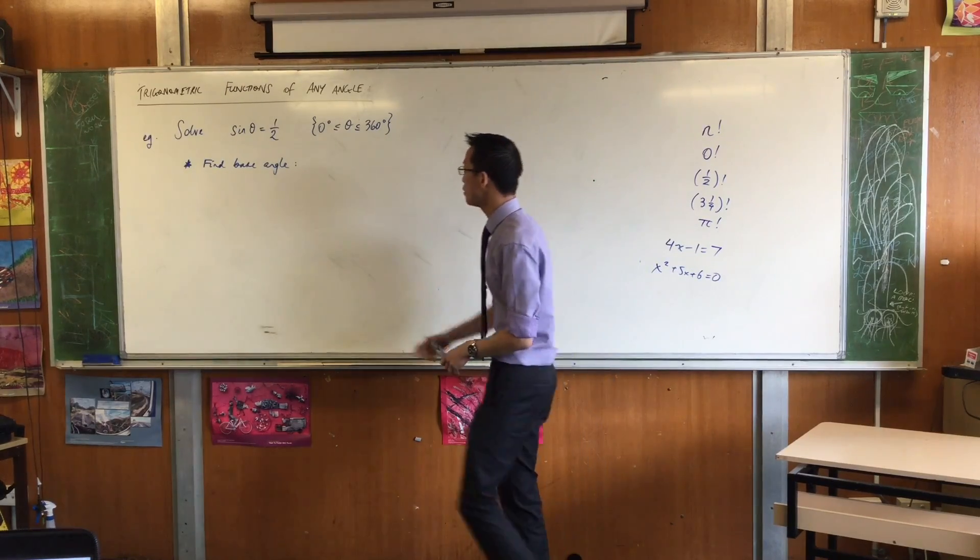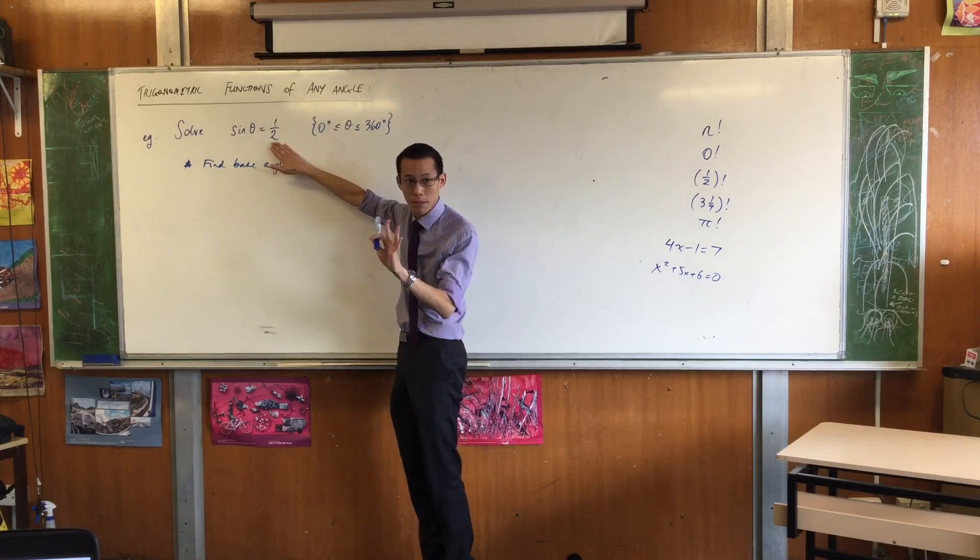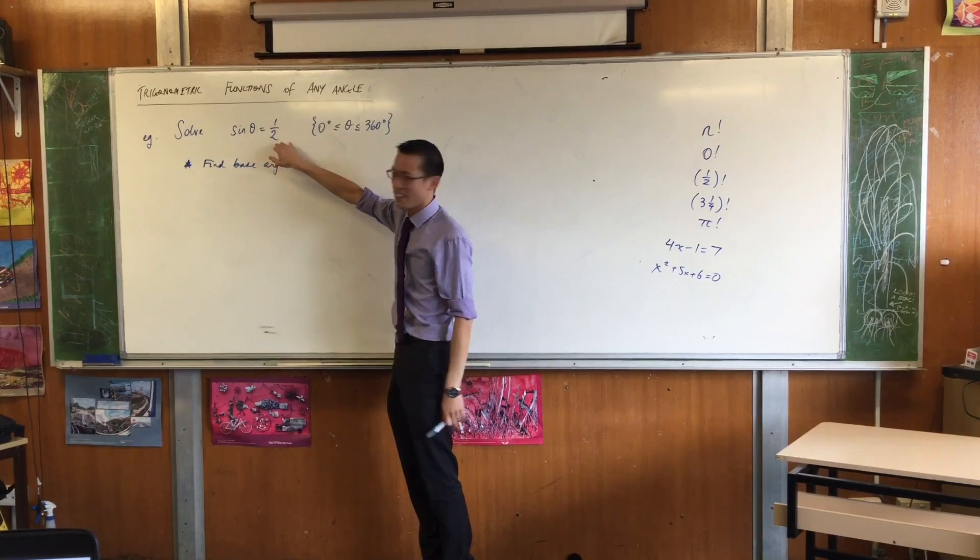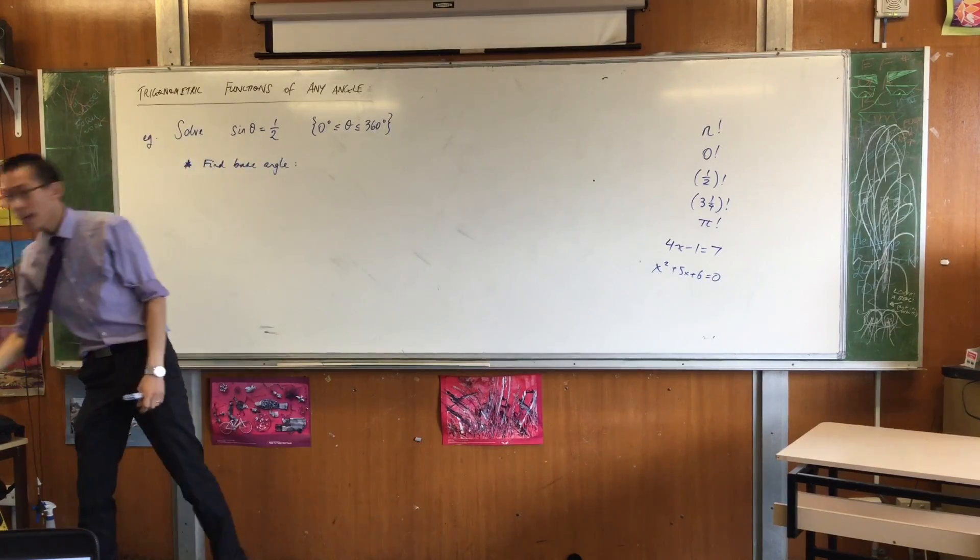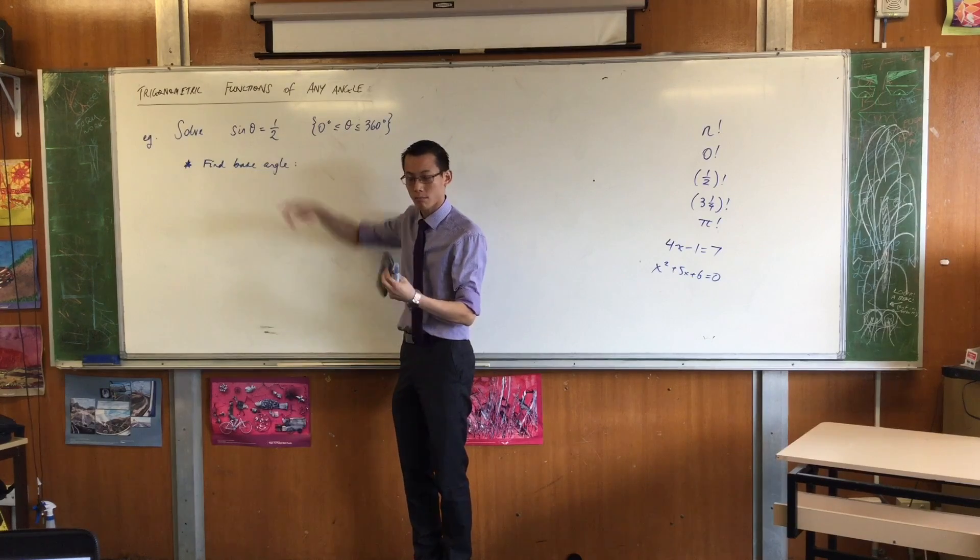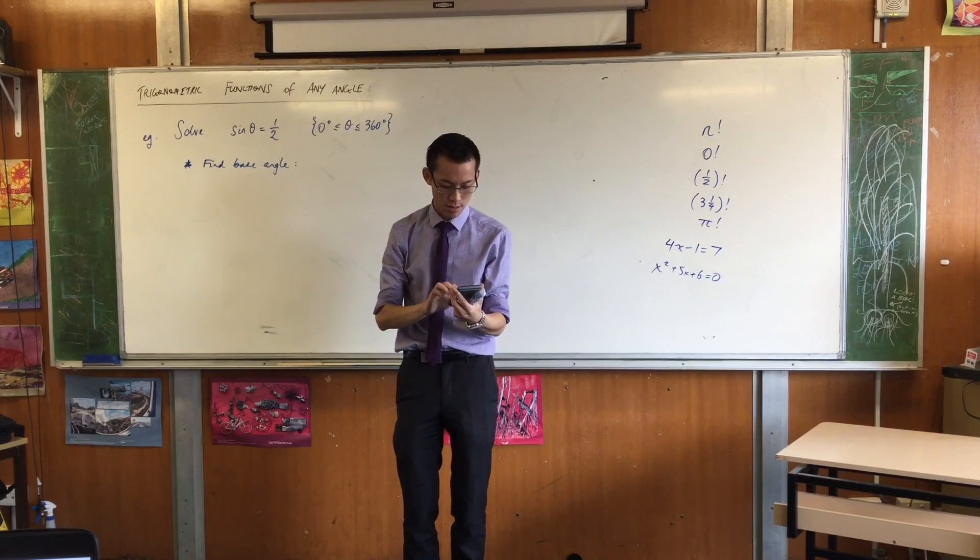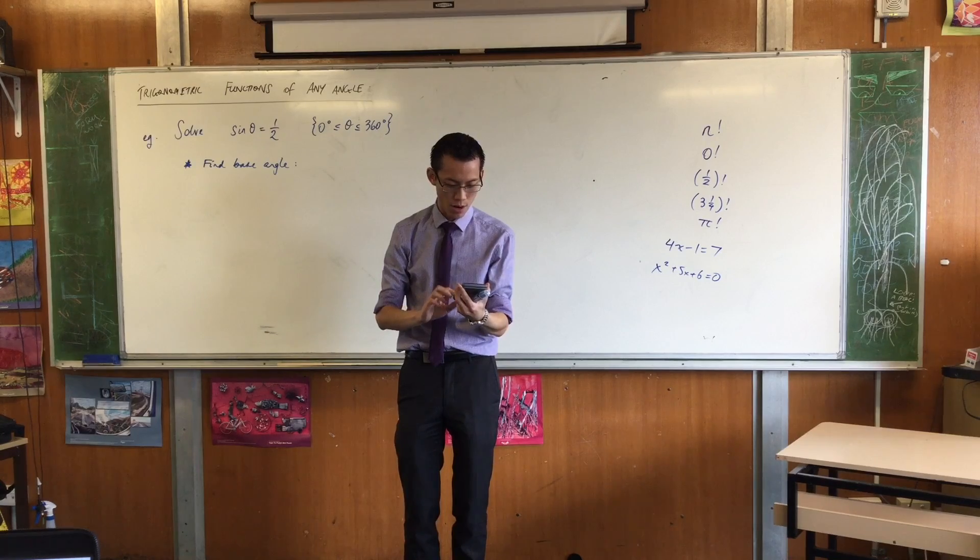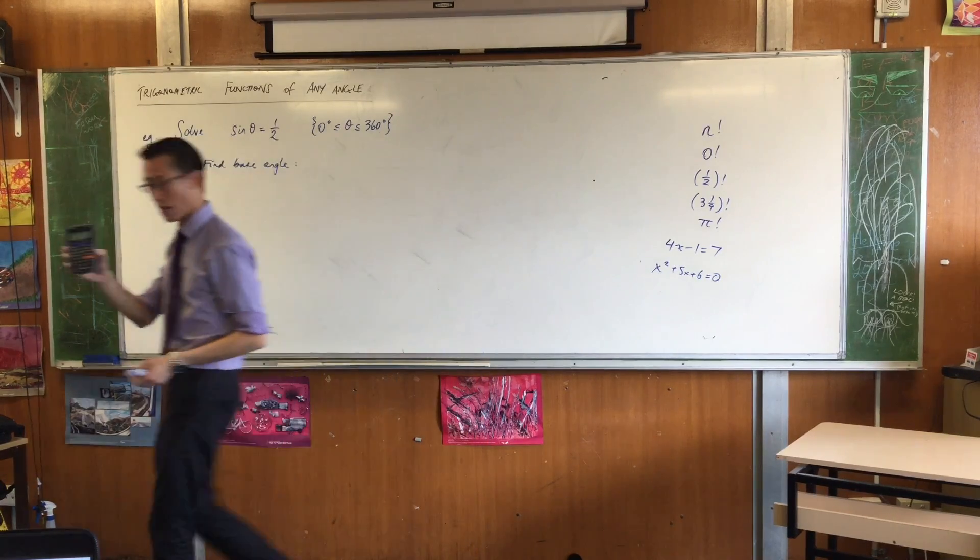The way you get the base angle is you ignore the sign up here. And I hope this is a bit sort of revision-y from last year. There's no sign at the moment. I mean, it's a plus. Right? You go to your calculator, and you say, shift, sine of this number, here. Okay? So, you can go ahead, you can put that in. Shift, sine, 0.5 or a half. And it should hand back to you 30 degrees. Is that okay? Okay.